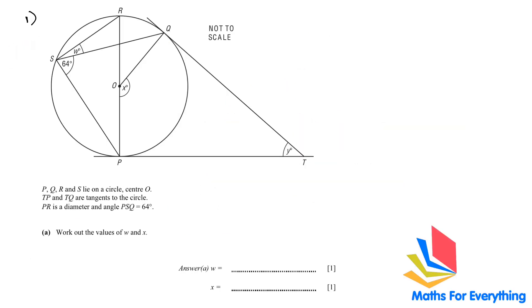Question number one. P, Q, R and S lie on a circle center O. TP and TQ are tangents to the circle, meaning they touch the circle at only one point. Work out the values of W and X. We know that PR is the diameter and the angle opposite the diameter is equal to 90 degrees, so this angle is 90 degrees.